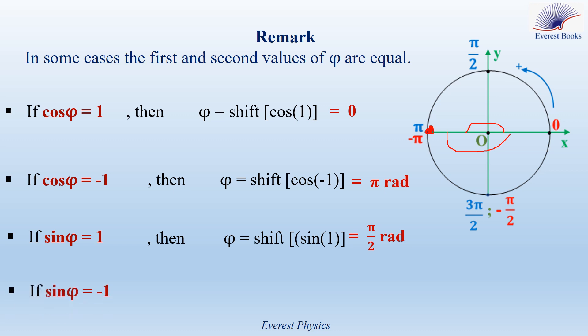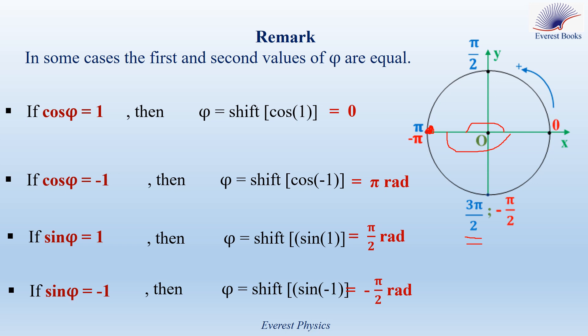If sine phi equals minus 1, the calculator gives minus pi over 2 radians. The second value is pi minus minus pi over 2, which gives 3 pi over 2 radians. As you see, 3 pi over 2 radians and minus pi over 2 radians are in the same position on the circle — one with the positive sense and one with the negative sense — so they are equivalent, and we have only one value for phi.